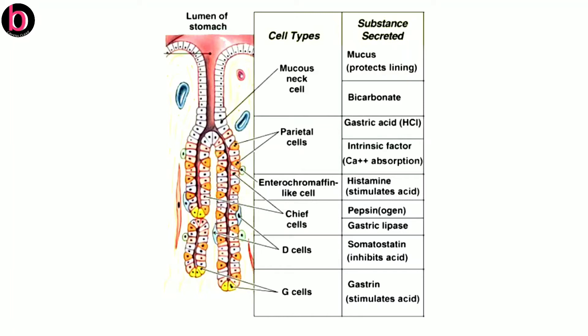After this, the next cell type is chief cells, also known as peptic or zymogen cells. These cells are responsible for secretion of protein-digestive enzymes like propepsin and prorenin. Propepsin is also known as pepsinogen, which is the inactive form of pepsin, while prorenin is the inactive form of renin. Along with this, there is also a little secretion of gastric lipase.